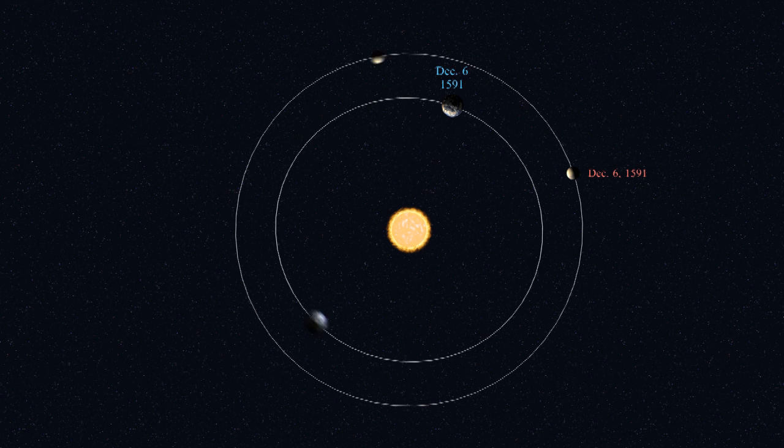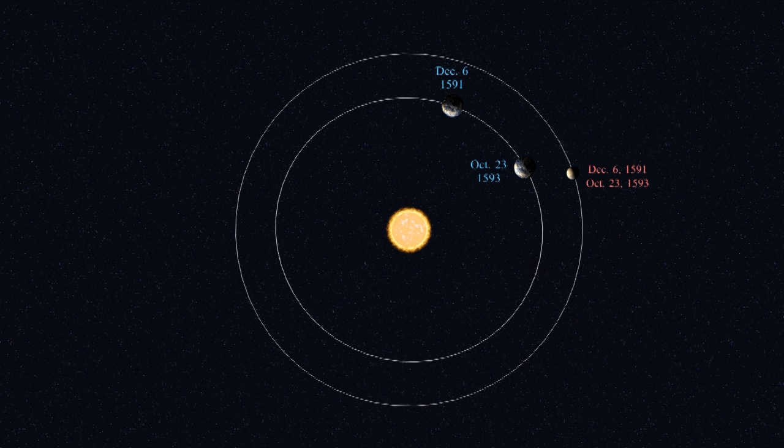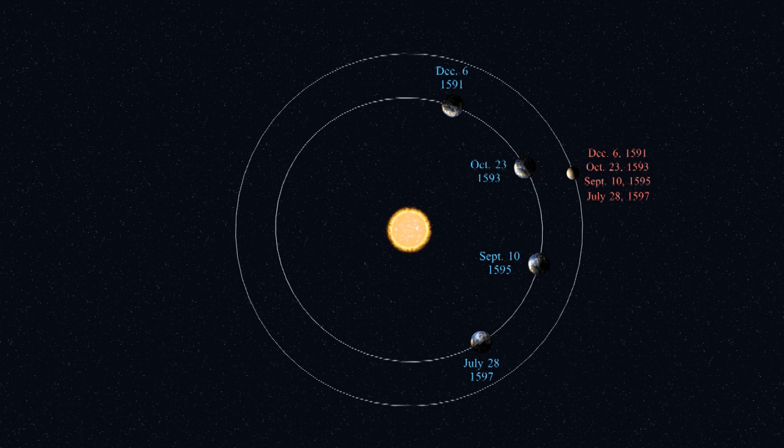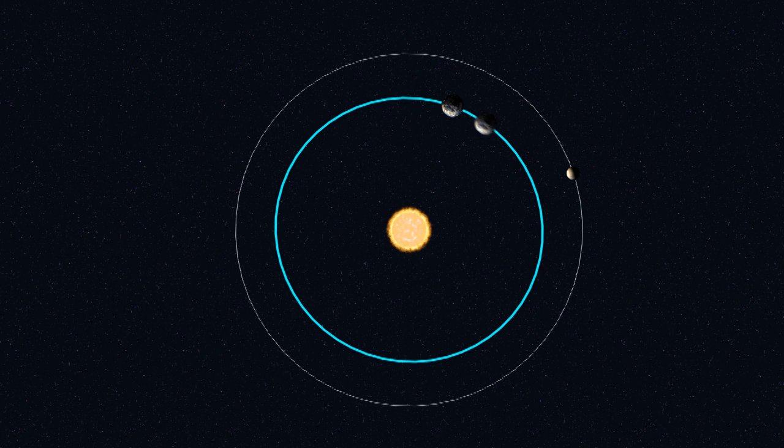One year on Mars lasts 687 days. If we use measurements that are spaced 687 days apart, Mars is always in the same location. Only the Earth is moving. And now, Kepler estimated the orbit of the Earth, then used that orbit to estimate the orbit of Mars.